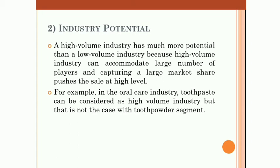So you can determine industry potential based on total industry sales potential. A high volume industry has much more potential compared to a low volume industry. For example, in the oral care industry, the toothpaste segment can be considered a high volume industry, but that is not the case with the tooth powder segment. So industry potential depends upon total industry sales potential.